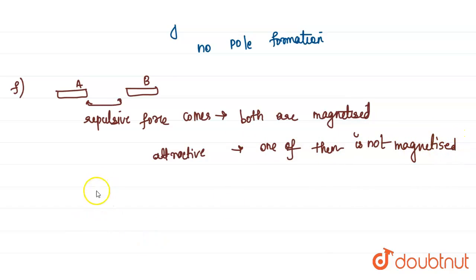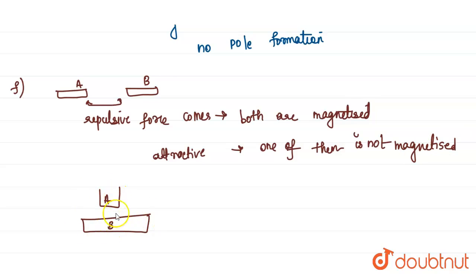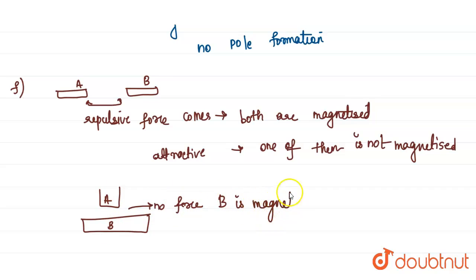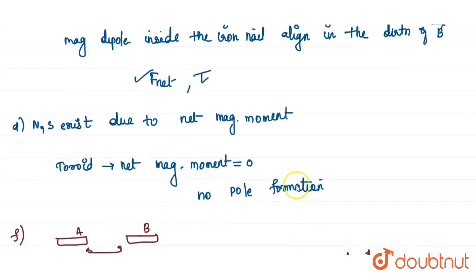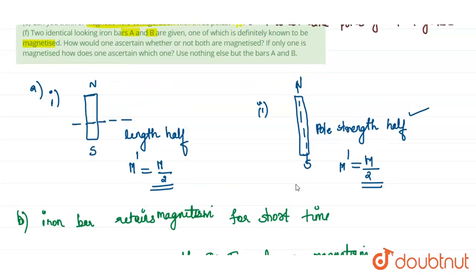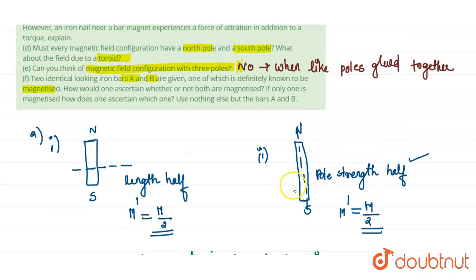To identify which one — A or B — is magnetized: if A is magnetized, place B and bring A near to the center of B. If there is no force between them, then we can say B is magnetized. By using only these two bars, we can find which one is magnetized, or whether both are magnetized or not.